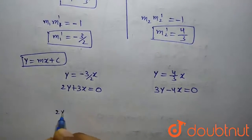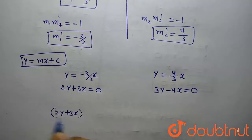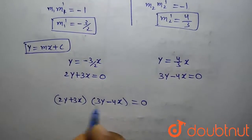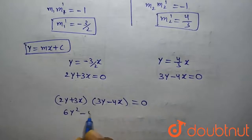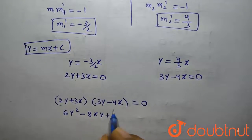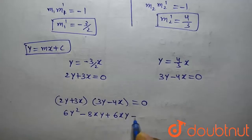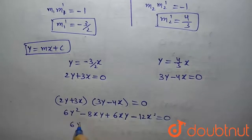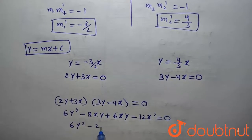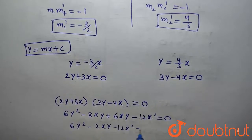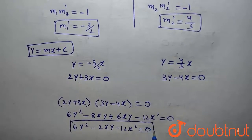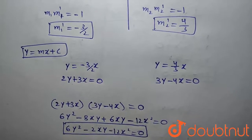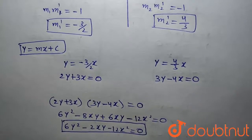Now we multiply these two perpendicular line equations: (2y plus 3x)(3y minus 4x) equals 0, giving 6y² minus 8xy plus 9xy minus 12x² equals 0. This combined equation represents the pair of lines through the origin which are perpendicular to the given pair of lines.